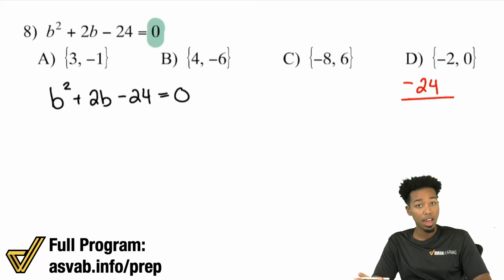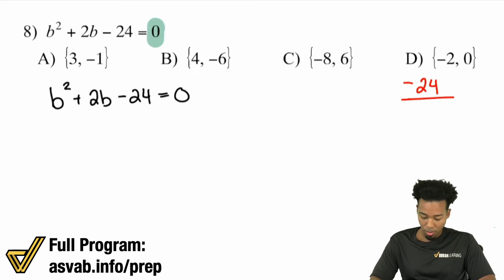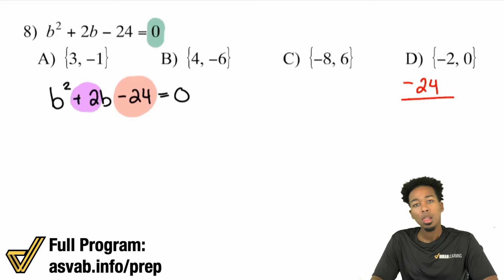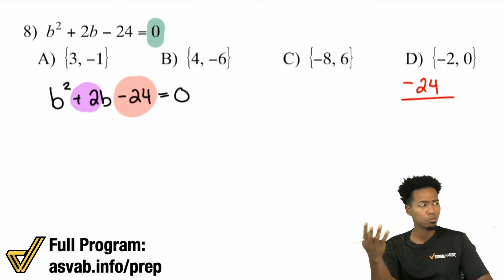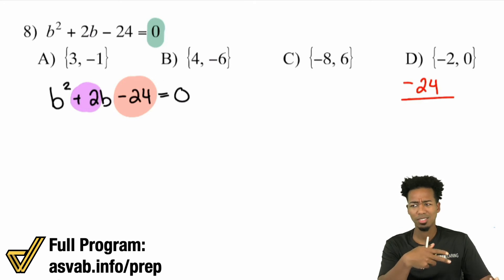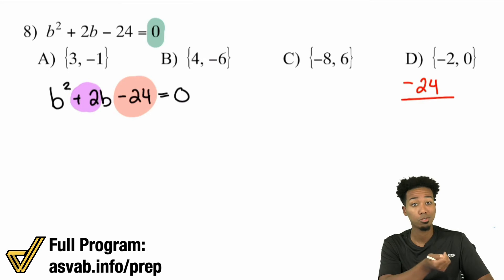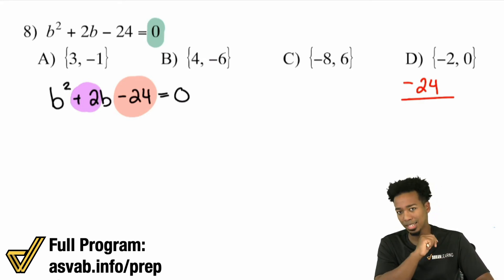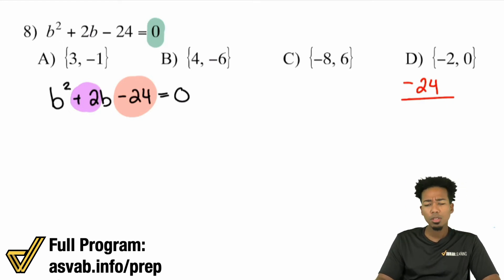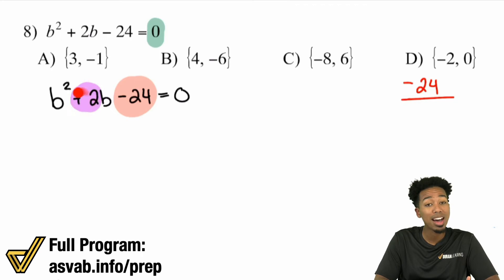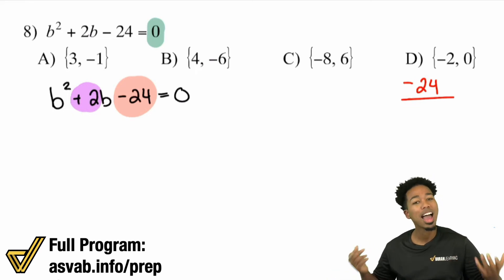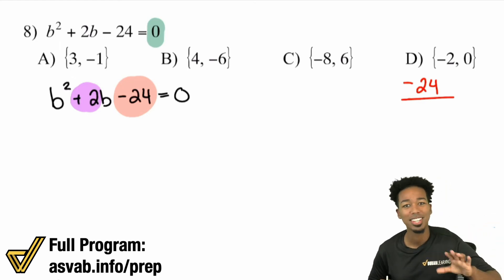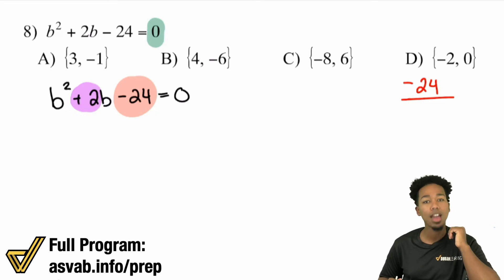You're looking for factors of C that add up to B. When you have a positive and a negative number being added and the result is positive, the bigger number has to be positive. Checking factors of negative 24: negative 1 times 24 — difference isn't 2, doesn't work. Negative 2 times 12 — doesn't work. Negative 3 times 8 — doesn't work. Negative 4 times 6 — that works! Because positive 6 plus negative 4, or 6 minus 4, equals positive 2, and negative 4 times 6 is negative 24.